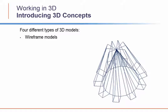Wireframe models consist of lines and curves that define the edges of a 3D object. You can create a wireframe model by drawing lines, arcs, polylines, and other 2D objects anywhere in 3D space. Wireframe models have no surfaces — they always appear as outlines. Because you must individually draw and position each object that makes up a wireframe model, creating them can be exacting and time-consuming.